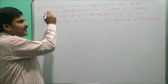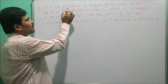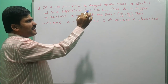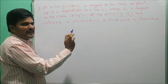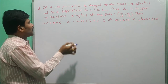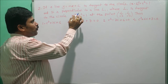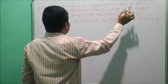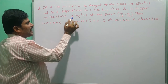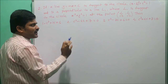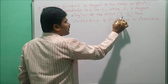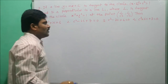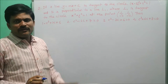The second problem: if the line y = mx + c is tangent to the circle (x - 3)² + y² = 1, and it is perpendicular to a line L1, where L1 is tangent to the circle x² + y² = 1 at the point (1/√2, 1/√2), then which of the options is correct?